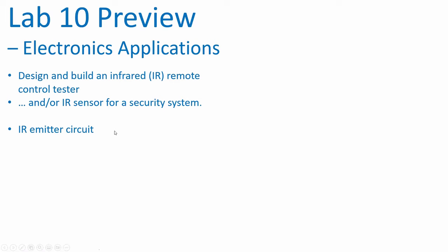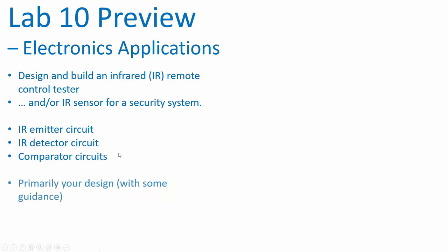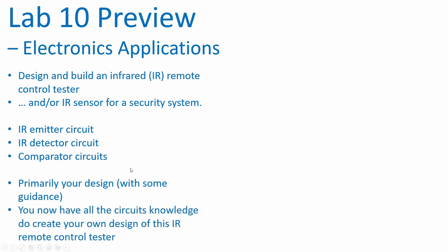You're going to build an infrared emitter circuit, which is going to be an LED circuit, and an infrared detector circuit, which is a photo transistor. It behaves like a transistor except instead of base current causing collector current to flow, infrared light impinging on its window causes collector current to flow. You're going to build a comparator circuit. This is primarily going to be your own design with some guidance — everybody might have different values in their circuit, but I'll give guidance and the TAs will give guidance. You now have all the circuit knowledge you need.